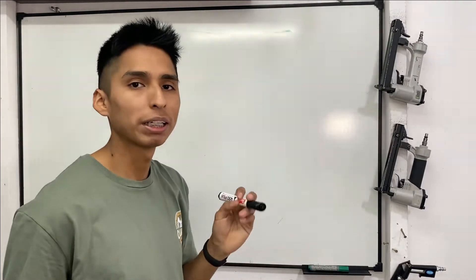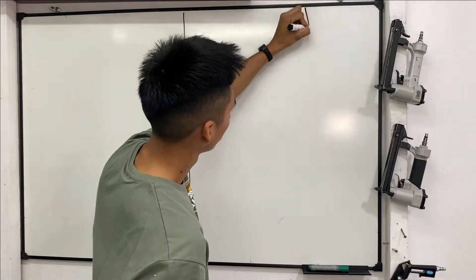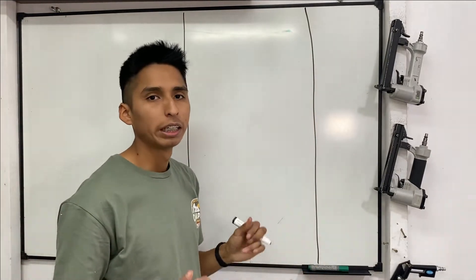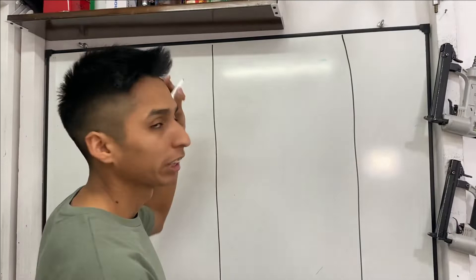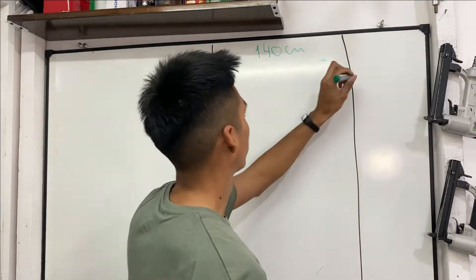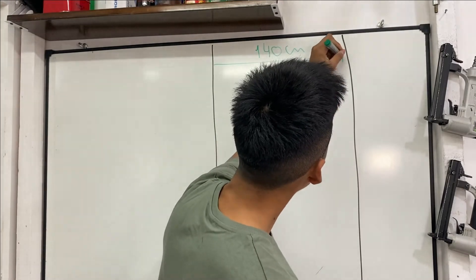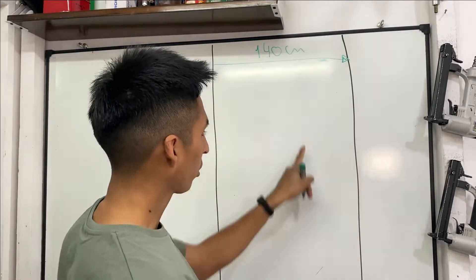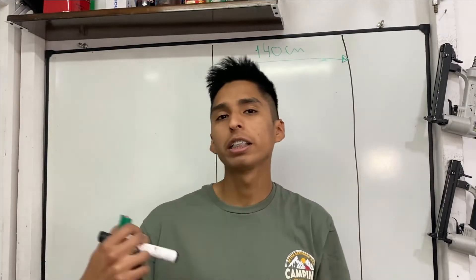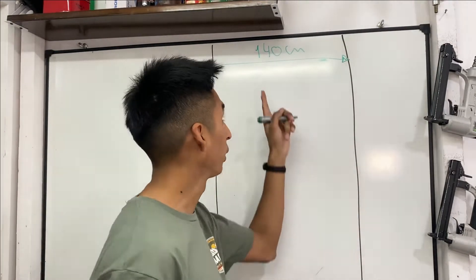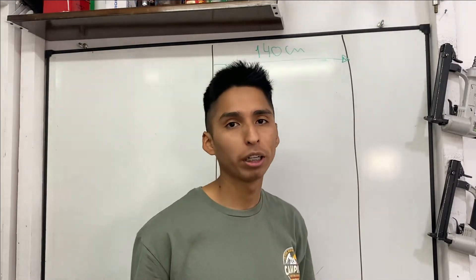Lo que vamos a ver con el fibrón negro va a ser como si fuera la tela. Esta es la tela. Espero que se entienda, es un poquito más recto, pero para que se den una idea. Sabemos que la tela para tapicería, de ancho, el ancho de la tela es un metro cuarenta centímetros. Sabemos que el ancho de la tela es un metro cuarenta centímetros y el largo puede ser diez metros, quince metros, o algo más chico: un metro, treinta centímetros, cuarenta centímetros. Ese es el largo, pero el ancho siempre va a ser un metro cuarenta, eso no cambia nunca.